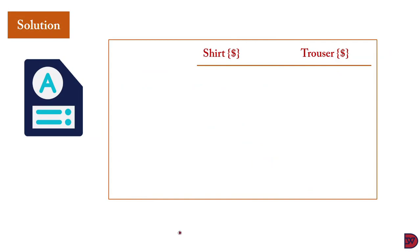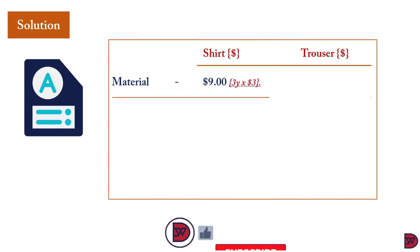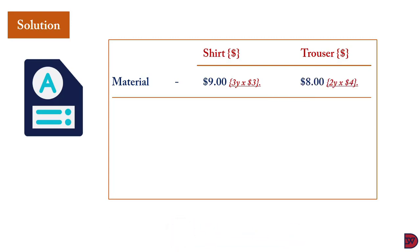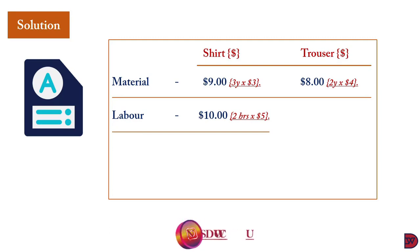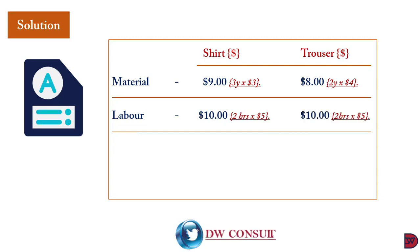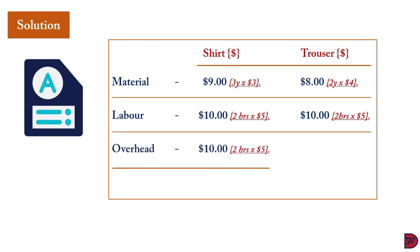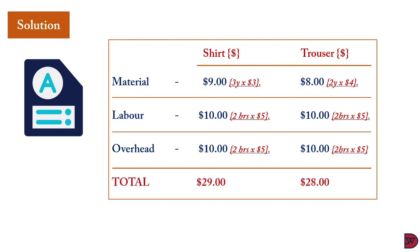For the solution: material for shirts is $9 (3 yards × $3 per yard); trousers is $8 (2 yards × $4 per yard). For labor: shirts take 2 hours at $5 per hour giving $10; trousers also take 2 hours at $5 giving $10. For overheads, shirts get $10 (2 hours × $5 overhead rate) and trousers also get $10 (2 hours × $5). The total cost per unit is $29 for shirts and $28 for trousers. We will now show the workings for the overhead cost per unit.